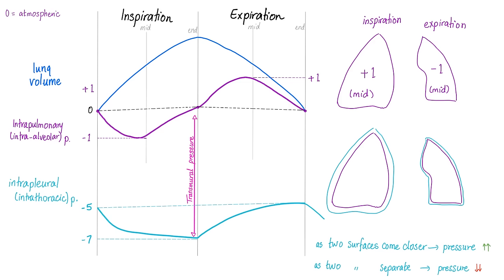Intrapulmonary (intra-alveolar) pressure starts to become negative on inspiration. Negative pressure sucks air in, which increases pressure back toward zero. During expiration, the diaphragm goes up and abdominal muscles contract to push the air out — pressure increases and volume decreases. Notice that when pressure decreased, volume increased — according to Boyle's law.